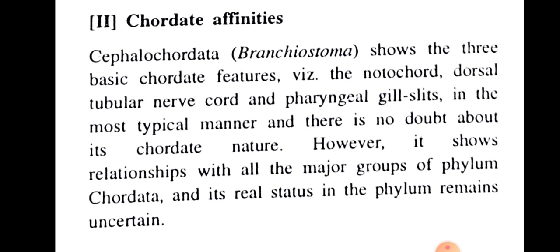Now, Chordate Affinities. Cephalochordata shows the three basic chordate features — that is, the notochord, dorsal tubular nerve cord, and pharyngeal gill slits — in the most typical manner, and there is no doubt about its chordate nature.